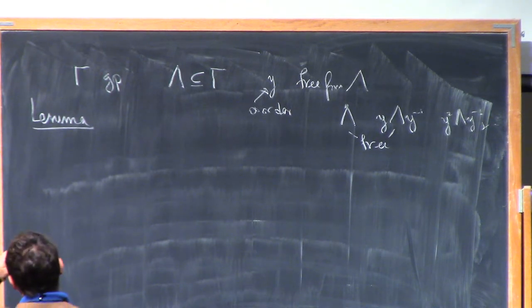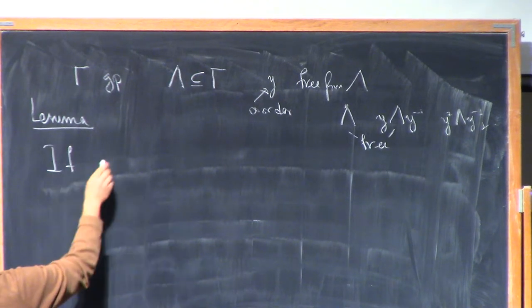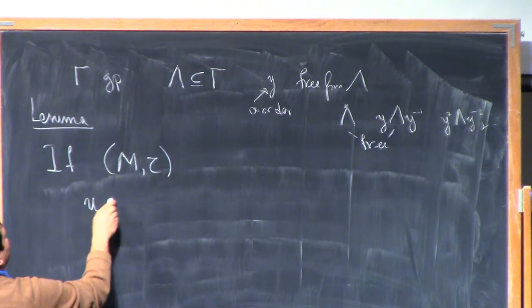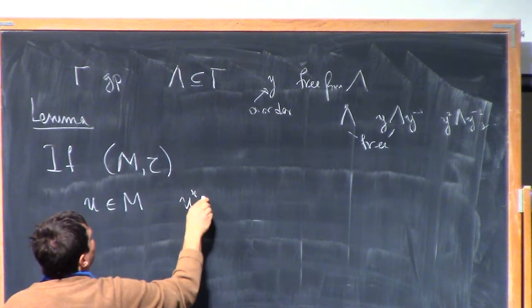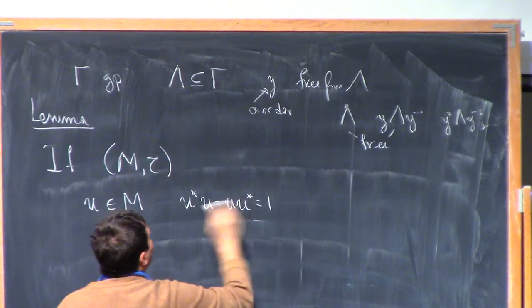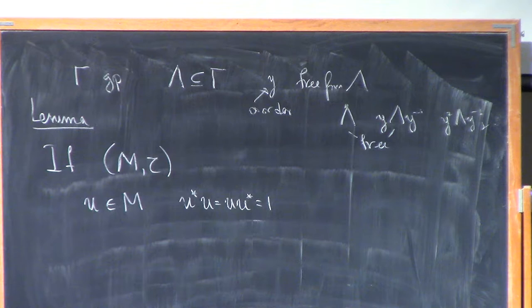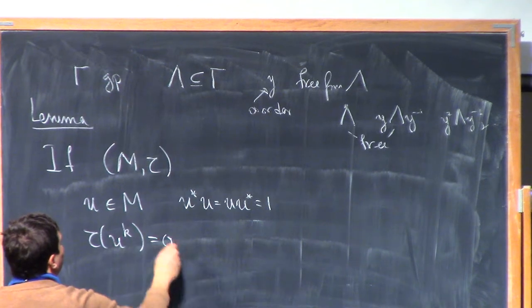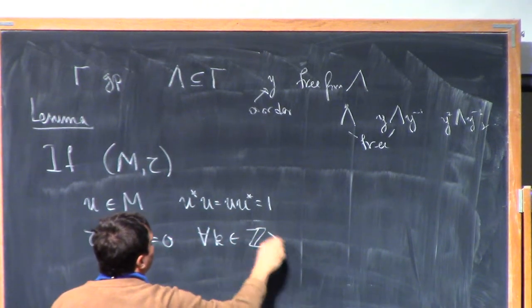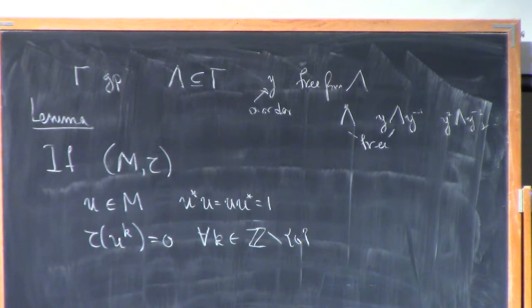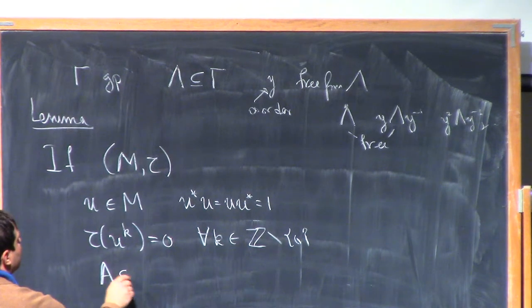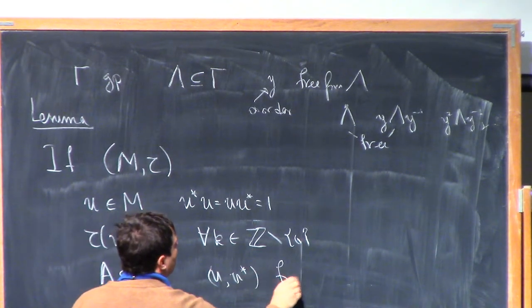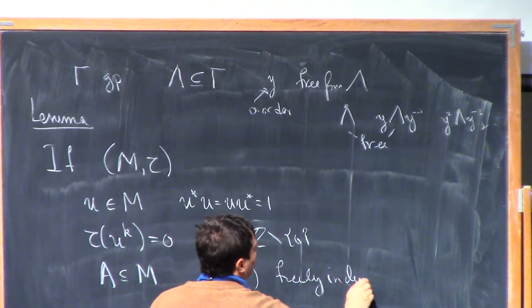Well, somehow the same phenomenology happens in free probability. So if you have some M tau, your non-commutative probability space, and I have a unitary here, so u star u is 1. And I will assume the analog of saying that it has infinite order. So I will assume that the moment, all the powers of u are zero for all k, except for the zeroth power.